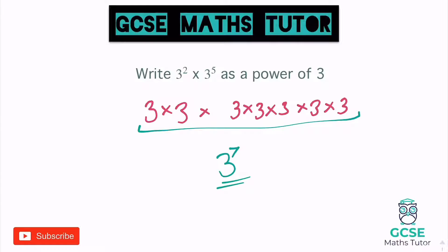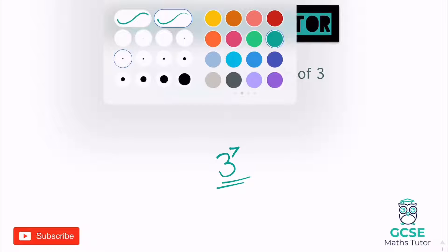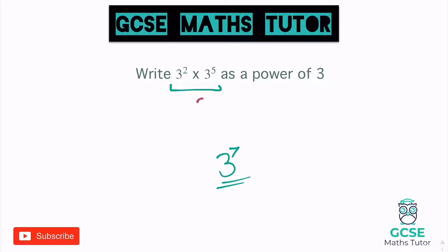But if we get rid of all of this and have a look at how we get that just from looking at the numbers above — if we have a look at these powers — the power of the first three is two, the power of the second three is five. Well, if we just add those together, two plus five equals seven, which is the power that we got down here: three to the power of seven.